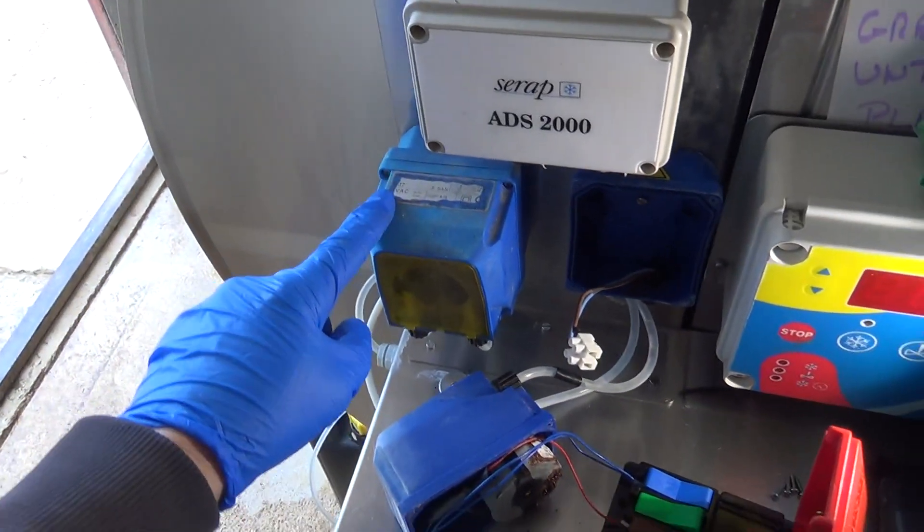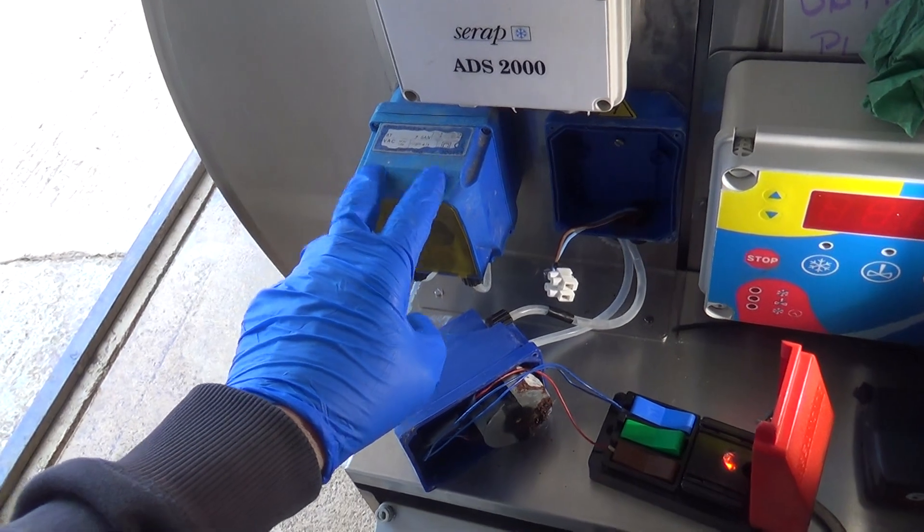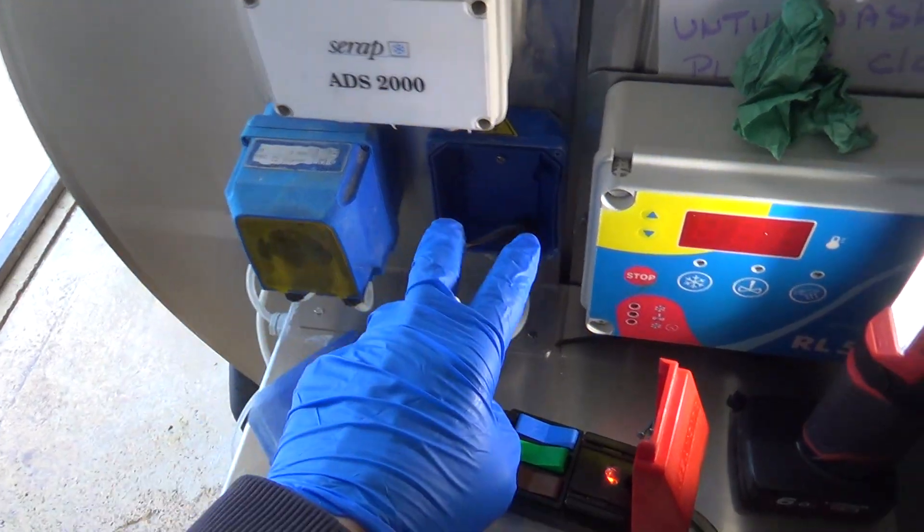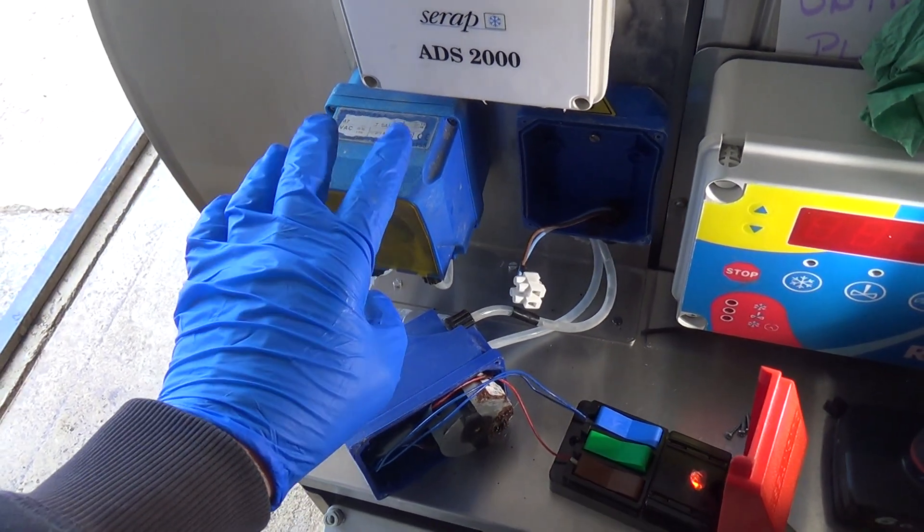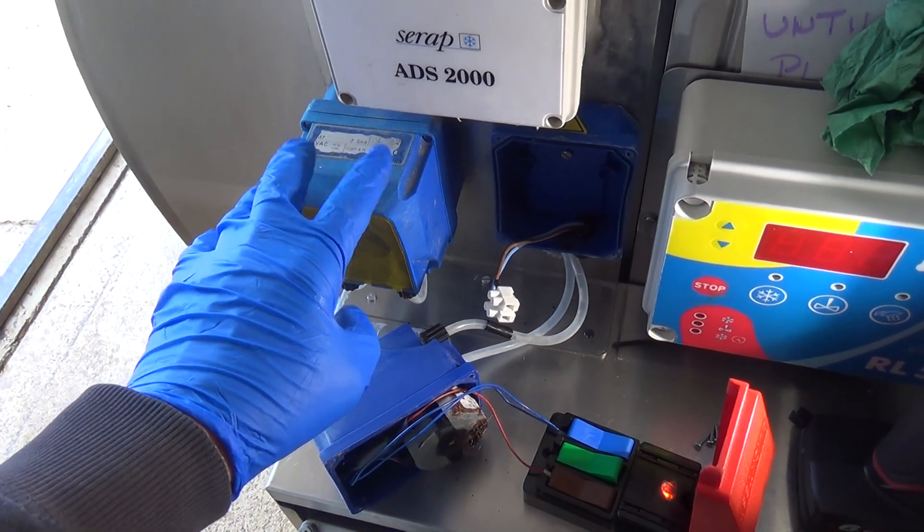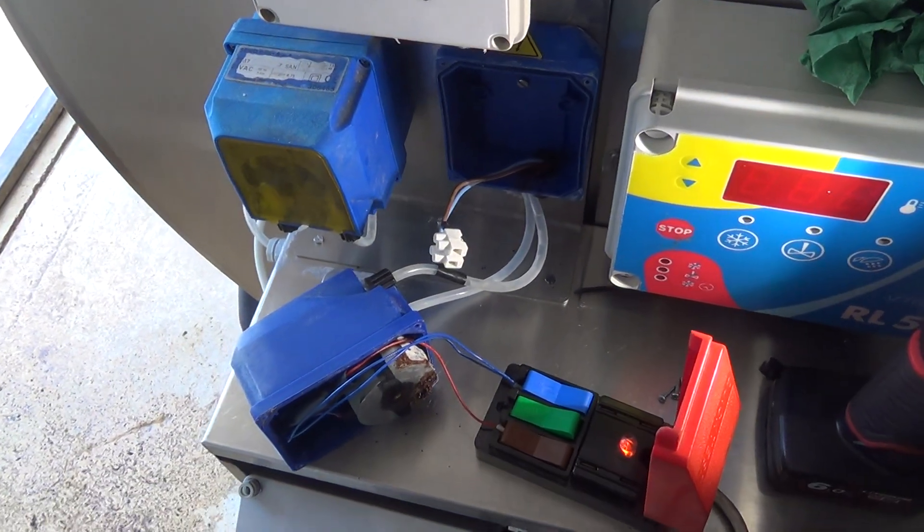It's got automatic dosing for the chemical. Some tanks have an alkaline pump and an acid pump and they alternate between them, so it'll do three or four alkaline washes which will get rid of the fat from the milk, and then they'll do an acid wash which will get rid of any limescale or milkstone.